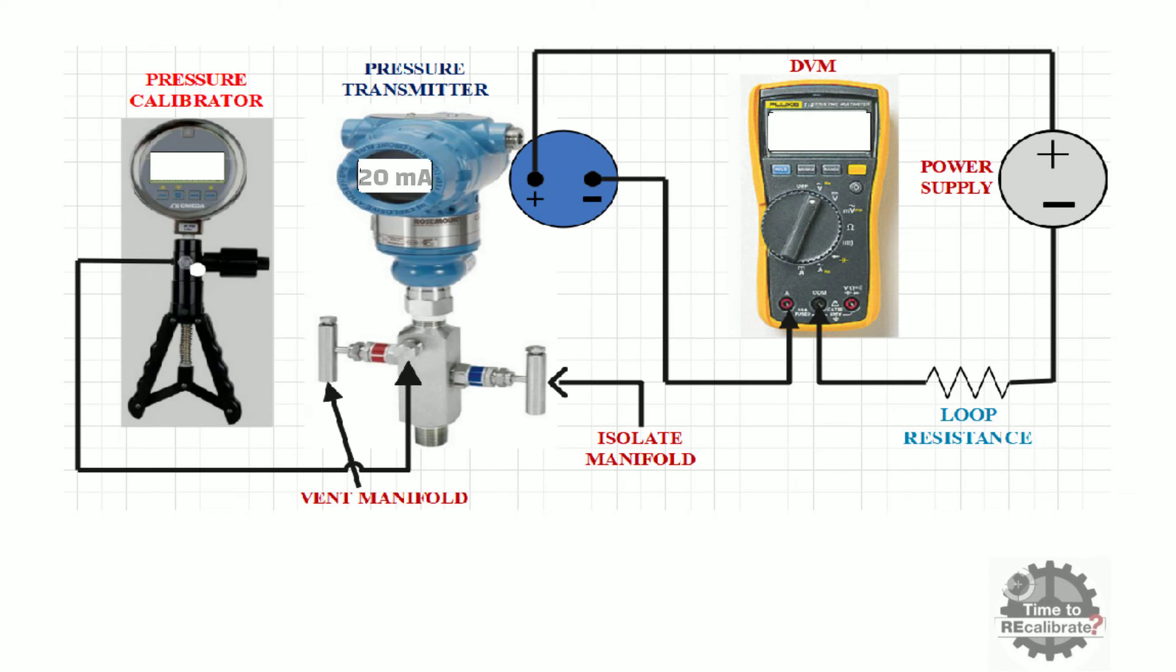Repeat same steps to set 20mA in transmitter. And measure value in multimeter, measured analog output value will be close to 20mA.